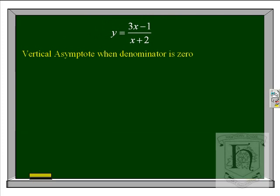Let's look at finding the asymptotes. A function y equals 3x minus 1 over x plus 2 will have a vertical asymptote when the denominator is zero. When x plus 2 is equal to 0, x is equal to minus 2. Our vertical asymptote is at x equals minus 2.